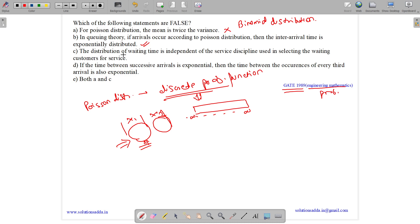Option C, the distribution of waiting time is independent of the service discipline used in selecting the waiting customers for service. No, this is false. It is dependent, not independent. So this option is also false.